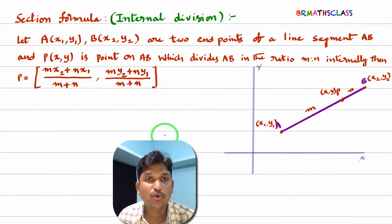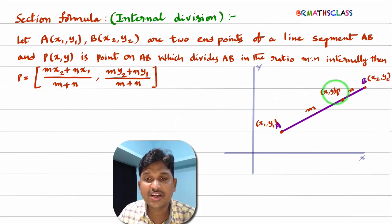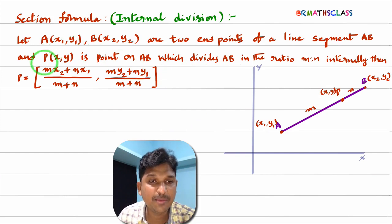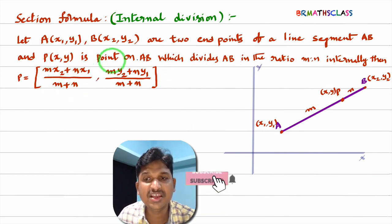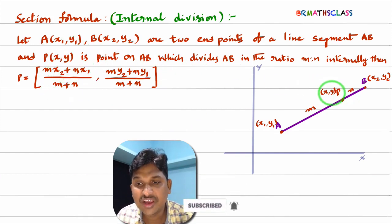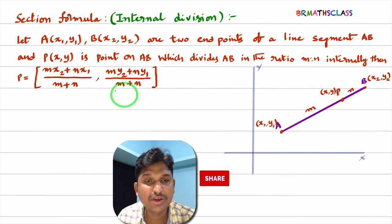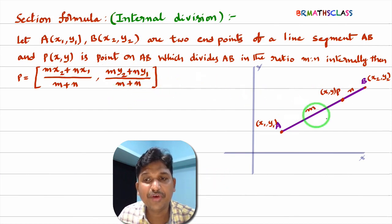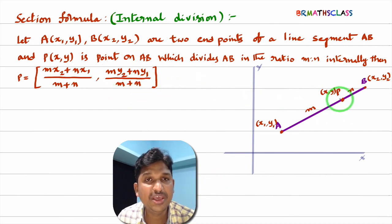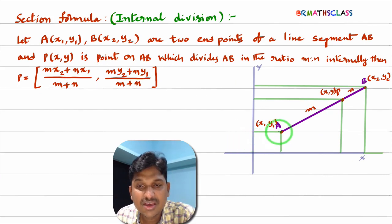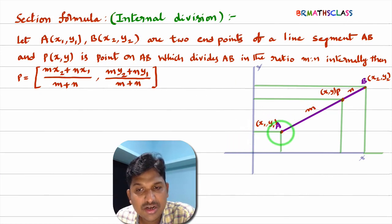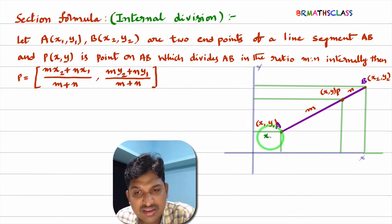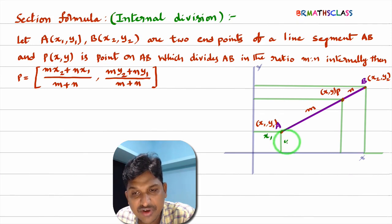We are trying to prove that x = (Mx2 + Nx1)/(M + N) and y = (My2 + Ny1)/(M + N). We are finding the coordinates of point P using the section formula. As we consider A as (x1, y1), the perpendicular distance from the point to the y-axis is x1, and the perpendicular distance from the point to the x-axis is y1.